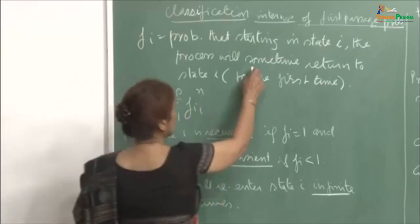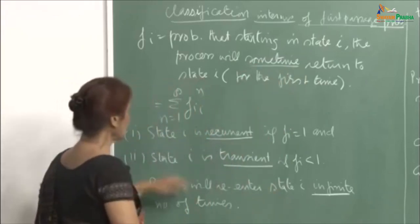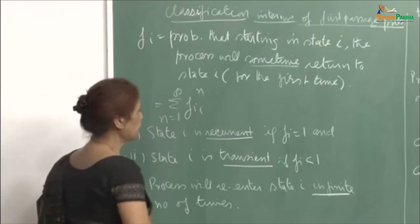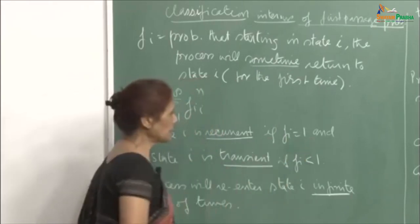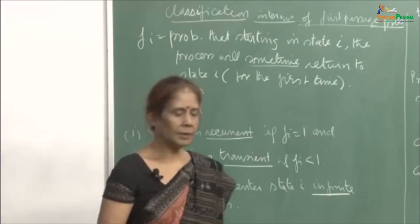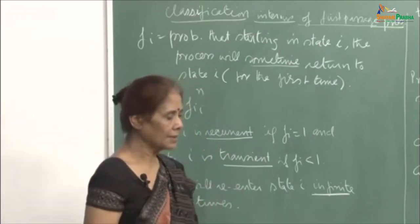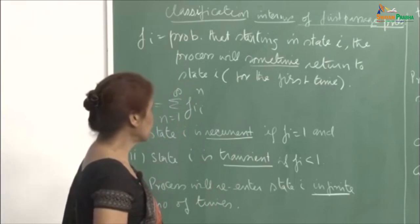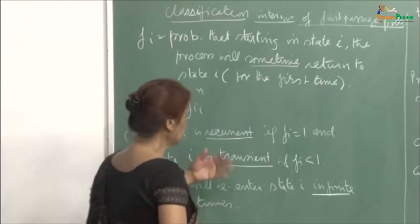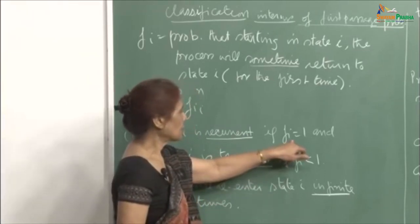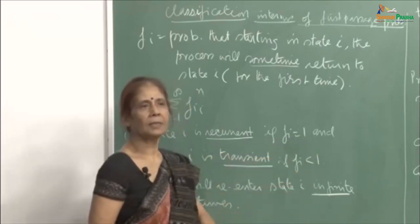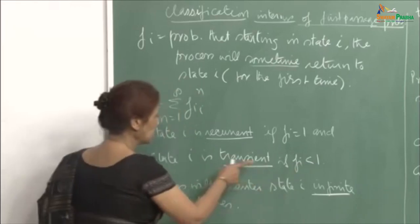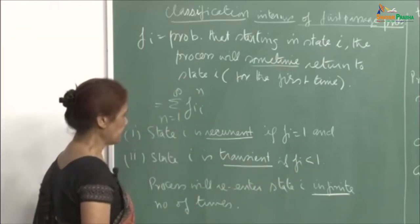We say that state i is recurrent if f_i = 1 — it is a certain event that the system will sometimes return to state i. If f_i is less than 1, then it is a transient state. If f_i = 1, the system will return to i after some time, and since it is a Markov process, the whole process starts fresh each time — so the system will keep coming back to i an infinite number of times.